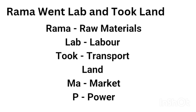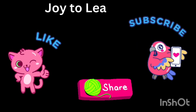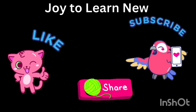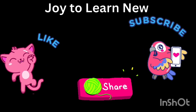'Land' represents land. Then in the word 'map,' M-A represents market and P represents power. That's all! Using this shortcut you can write all the factors affecting the location of industries.